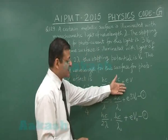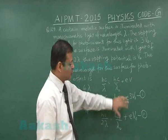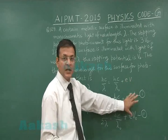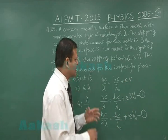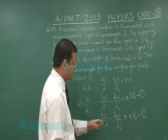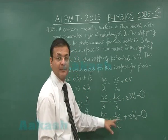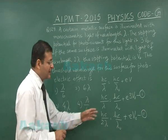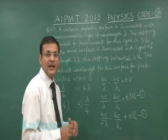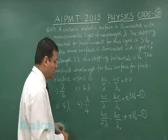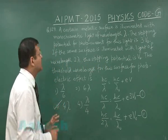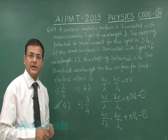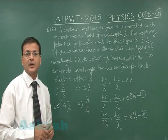Since λ₀ has to be eliminated, multiply the second equation by 3 and subtract. The stopping potential terms vanish, and you get λ₀ in terms of λ. Solving gives λ₀ equals 4λ. So option 3 is the answer for question number 129.